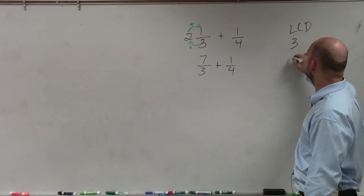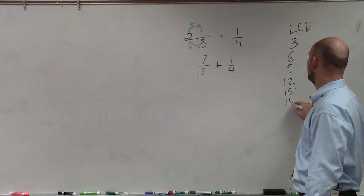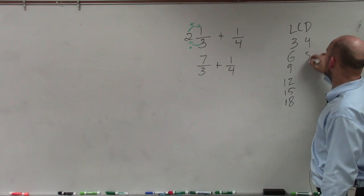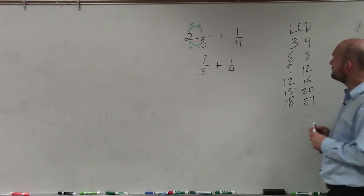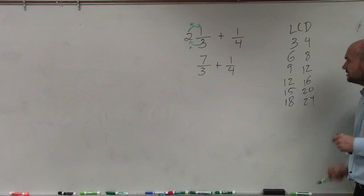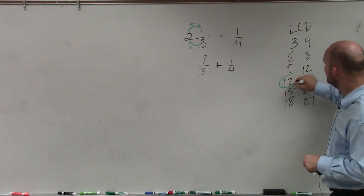Here, 3, 6, 9, 12, 15, 18, 4, 8, 12, 16, 20, 24. And we want to find the smallest number that they both share, which you guys hopefully can see is 12.